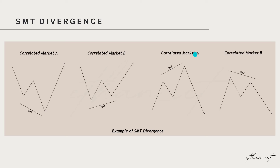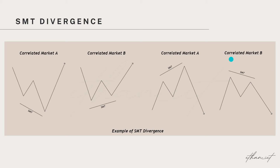Vice versa, here we have correlated market A making a new higher high, which means market B should be making a new higher high as well, but if it fails and makes a lower high instead, this would be SMT Divergence. When you get SMT Divergence on the lows, this is a bullish signature, so we're looking for bullish price action after this occurs. Whereas if you get SMT on the highs, you are looking for bearish price action, as that is a bearish signature.